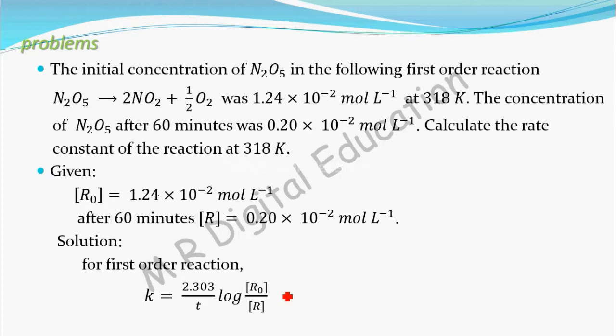See in this equation, he given R0, that is initial concentration, and he given after 60 minutes R as that value, and he also given time. So everything is known to you in this equation. So you can easily find the value of rate constant.